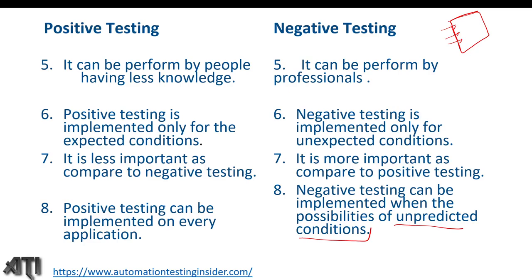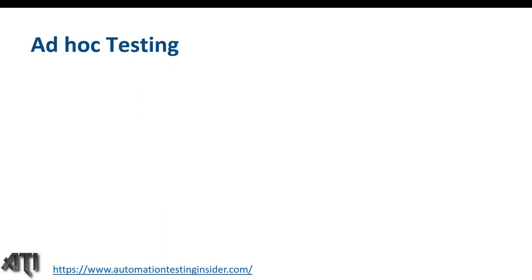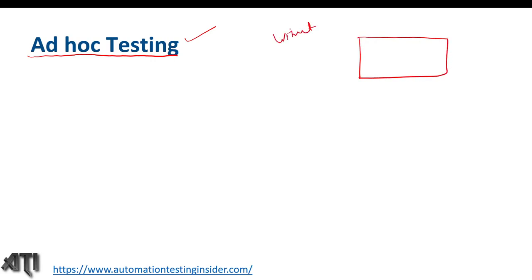Today I'm going to talk about ad hoc testing — what it is, why we perform it, its advantages and disadvantages, and the difference between ad hoc testing and exploratory testing. When we test any application without proper planning or documentation, that is ad hoc testing. It is also called informal testing or unstructured type of software testing.